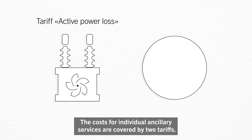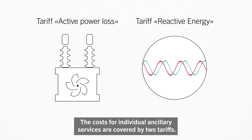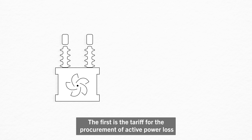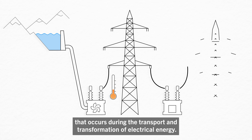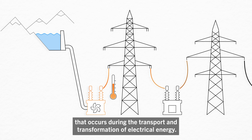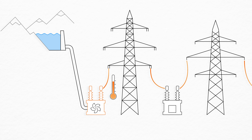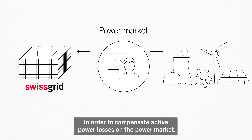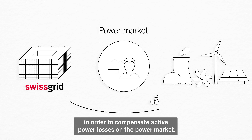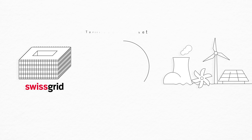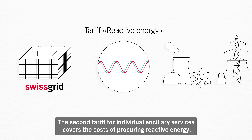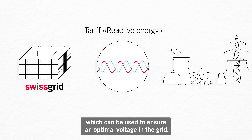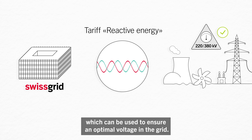The costs for individual ancillary services are covered by two tariffs. The first is the tariff for the procurement of active power loss that occurs during the transport and transformation of electrical energy. Swiss Grid procures electrical energy in order to compensate active power losses on the power market. The second tariff for individual ancillary services covers the costs of procuring reactive energy, which can be used to ensure an optimal voltage in the grid.